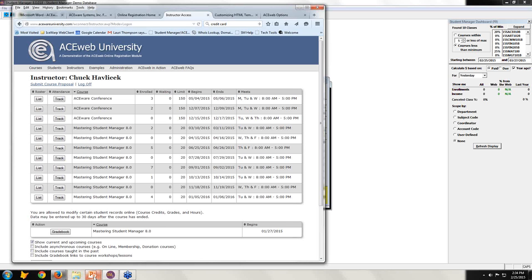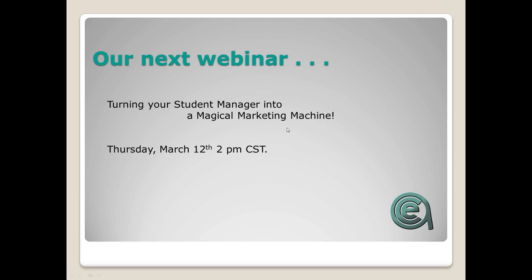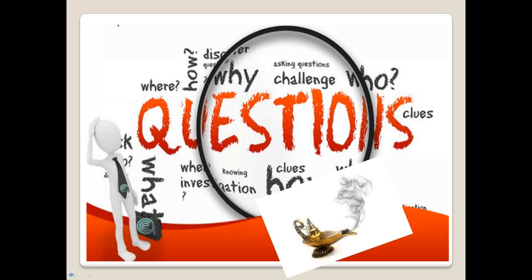Any other questions? Do want to remind people: only less than two months away is the annual conference in Myrtle Beach. Everybody with a paid-up support agreement gets some kind of scholarship. The next webinar is March 12th: turning your manager into a magical marketing machine — covering the marketing piece, promoting spring and summer programs. Tony would like to know if we offer any kind of search engine optimization features in ACEweb to have courses appear in Google's search.